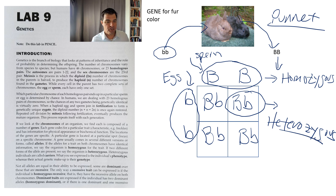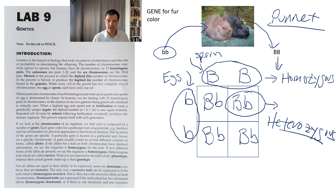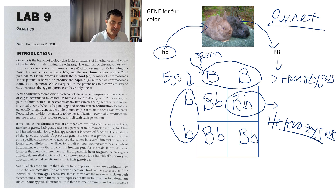That should be a good little introduction to seeing how you set up a Punnett square and how you link the idea of a certain gene relating to color. We'll move on and do some other examples. Thank you.